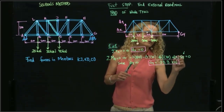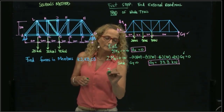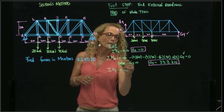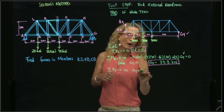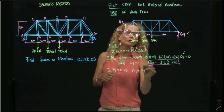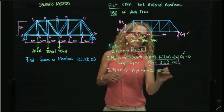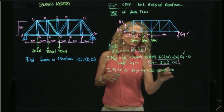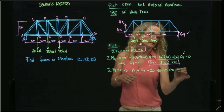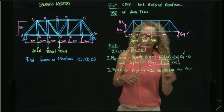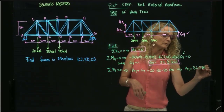Now that I have GY, I will sum forces in Y equals zero. I have AY plus GY, which I already know, minus 20, minus 30, minus 40, equals zero. Solving for AY gives AY equal to 56.7 kilonewtons.